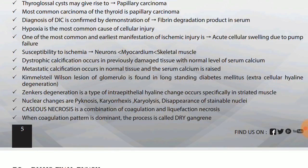Dystrophic calcification occurs in previously damaged tissue with normal serum calcium levels. Metastatic calcification occurs in normal tissue but with raised serum calcium levels. So: dystrophic — tissue is damaged, calcium is normal; metastatic — tissue is normal, calcium is increased.